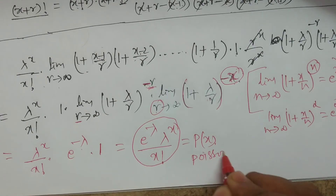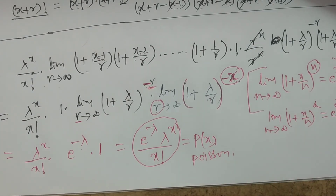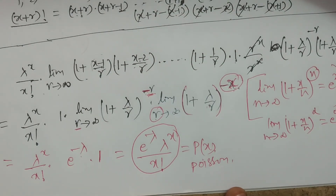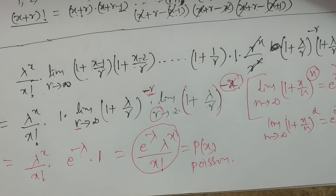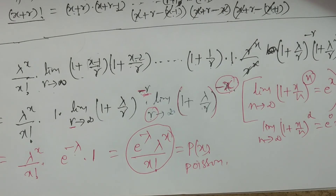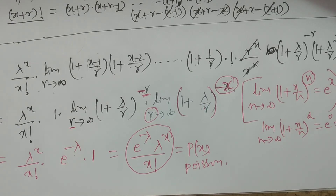Therefore the result is e^(−λ) · λ^x / x!, which is the probability mass function of the Poisson distribution. Under the conditions capital P → 0, R → ∞, and RP = lambda (finite), the negative binomial distribution tends to Poisson distribution. This is one important limiting case of the negative binomial distribution.